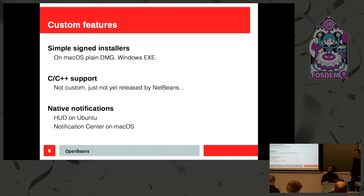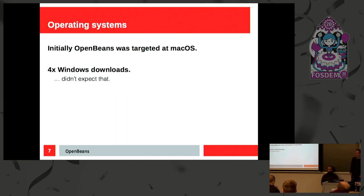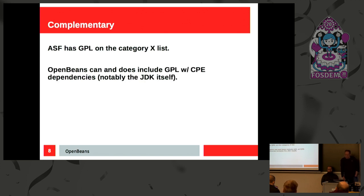And there are a few native additions: Notification Center on Mac OS, and improvements with Maven indexing built in. Initially the idea was to target Mac OS X, but he found out from his statistics that the majority of people were using Windows, so he's now focusing more on Windows. GPL is on the category X list, and for that reason the JDK can't be bundled with Apache NetBeans.